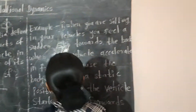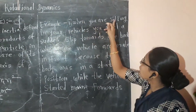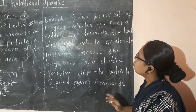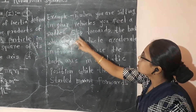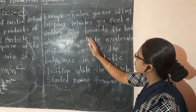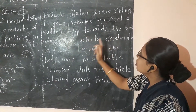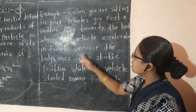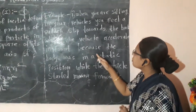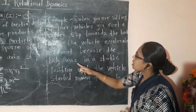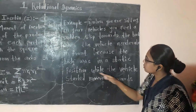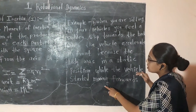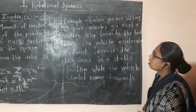For example, when you are sitting in your vehicle, you feel a sudden slip towards the back when the vehicle accelerates forward. This is because the body was in a static position while the vehicle started moving forwards.